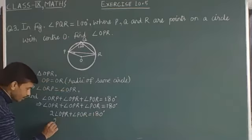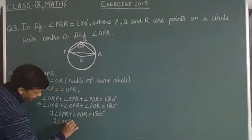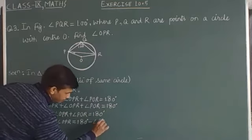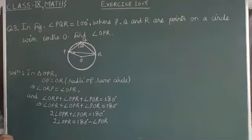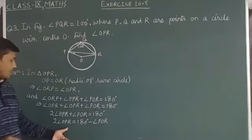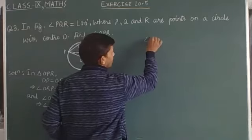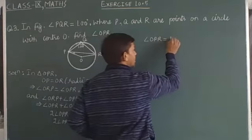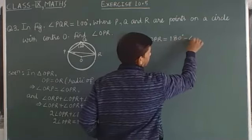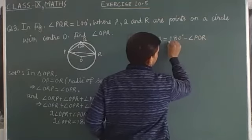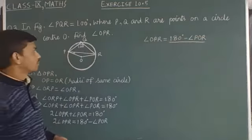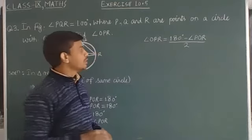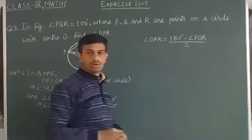Therefore, 2·angle OPR equals 180° minus angle POR. So angle OPR equals (180° minus angle POR) divided by 2. This is equation one. We can determine angle OPR easily once angle POR is known to us.